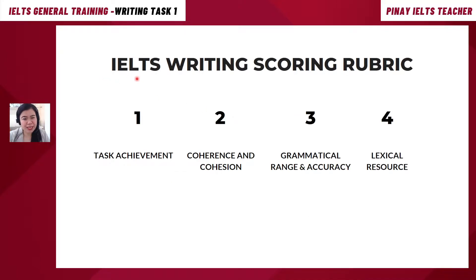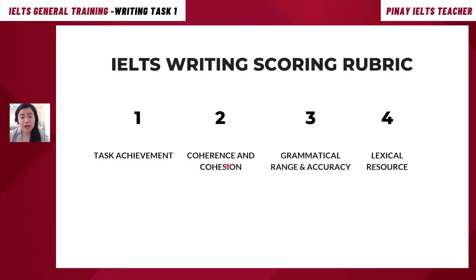How are you being graded with your writing task? You have to be familiar with the four factors considered before they give you your overall band score. First, you're going to be graded with your Task Achievement. Next is your Coherence and Cohesion. Third is your Grammatical Range and Accuracy, and fourth is your Lexical Resource.